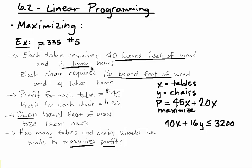And then they also give us information about the labor hours. We have a total of 520 labor hours. And so if it takes 3 labor hours for each table and 4 labor hours for each chair, we know that when we add these together, it cannot be more than 520. So that would be written as 3x plus 4y less than or equal to 520.